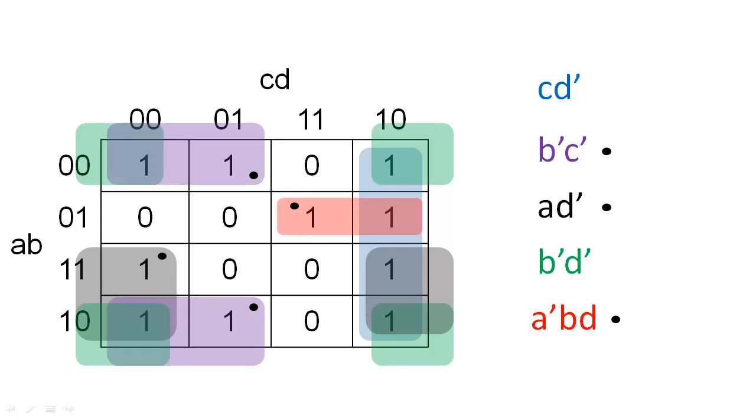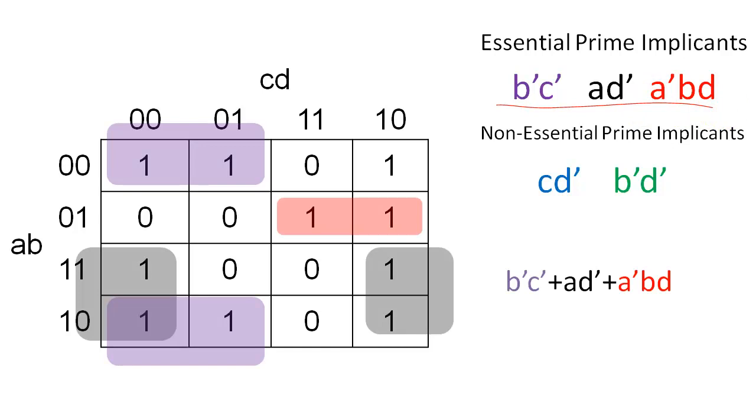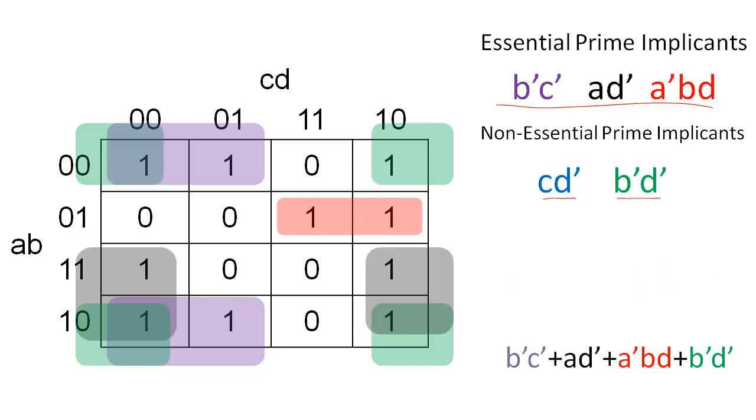The remaining other two prime implicants are non-essential prime implicants. To construct a minimal expression, we will automatically include our essential prime implicants in the final Boolean expression. Then, we must choose from the non-essential prime implicants to create an expression that uses a minimum number of product terms. In this case, we can create two minimal expressions that have the same number of product terms. The lower expression has one fewer literals, so it is technically the true minimal expression.